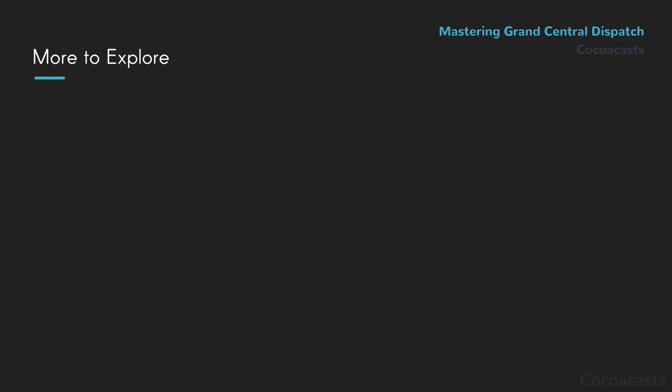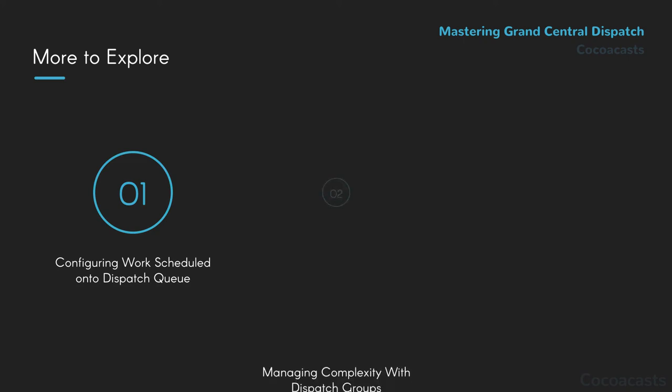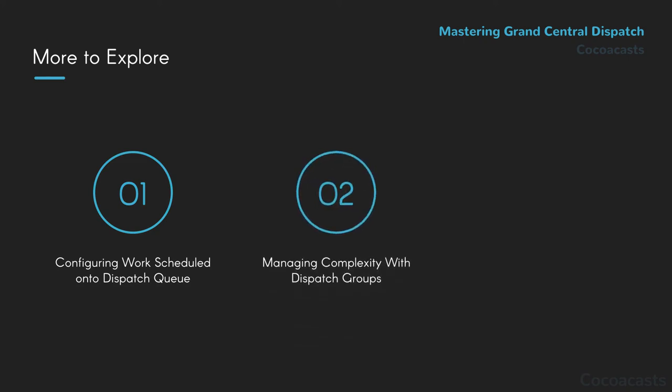Most developers only interact with dispatch queues, but Grand Central Dispatch has a lot more to offer. There are convenient APIs for configuring the work an application schedules onto a dispatch queue, and you can take advantage of dispatch groups to manage complexity. Grand Central Dispatch also defines semaphores to make sure you don't run into threading issues. Apple's concurrency library has matured over the years, and it offers a rich API that makes complex tasks trivial.